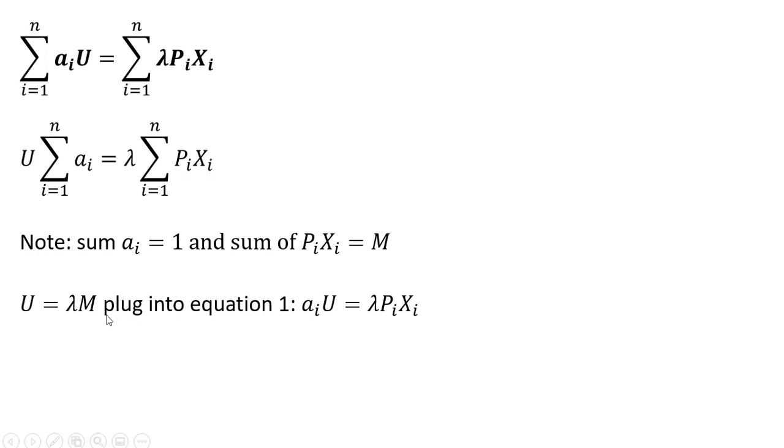And then we're going to plug this result here into equation 1. This was equation 1 on the last slide. So where we have U, we're going to replace it with lambda times M. And the lambda times M is I'm replacing this P times X over here with M, because the sum of it does equal M. And then this alpha i here becomes 1 as well. So that's why we just have U left over.